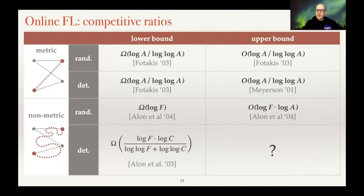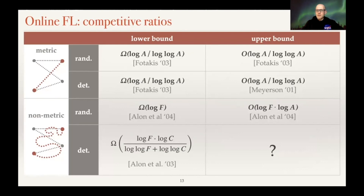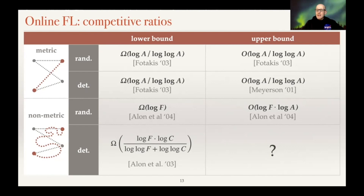What is known for the online case? The metric case is basically solved. The achievable competitive ratio is O(log a / log log a), where a is the number of active clients, and this is asymptotically tight for both randomized and deterministic solutions. For non-metric online facility location, the situation is less clear. We have an upper bound by Alan et al. which is O(log f · log a) competitive, where f is the number of facilities and a is the number of active clients. For deterministic algorithms, we have only a lower bound of roughly log f · log c, where c is the number of all potential clients.